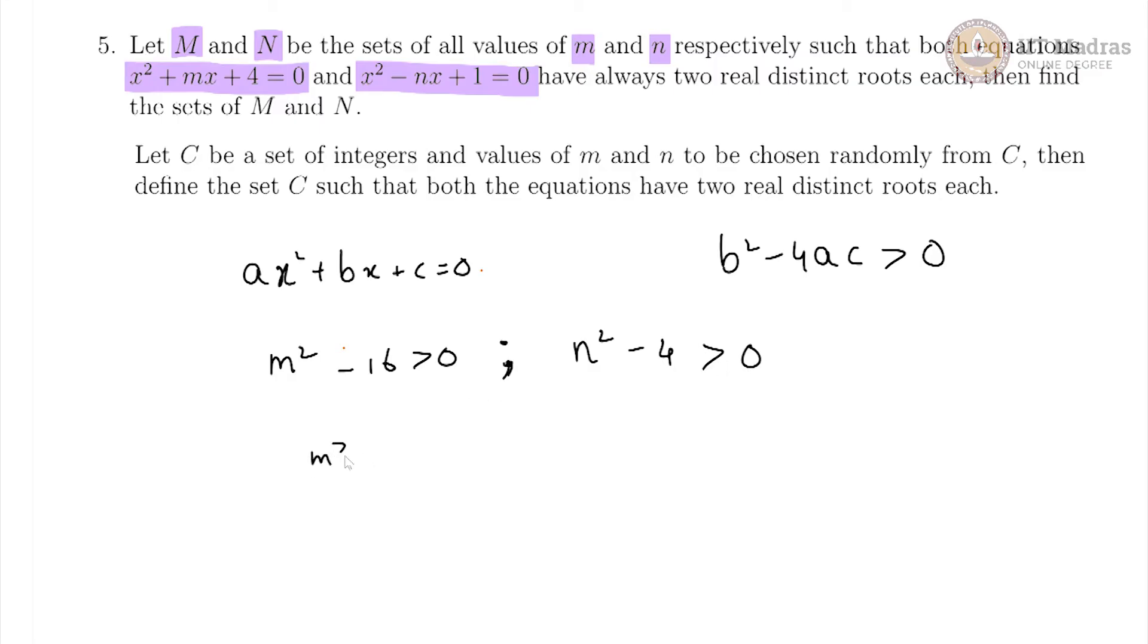So m² > 16 and n² > 4 and this would imply M is positive and greater than 4 or M is negative and lesser than -4, and here this would imply similarly N is positive and greater than 2 or N is negative and lesser than -2.